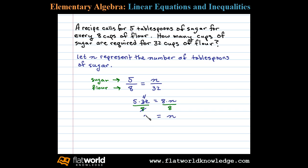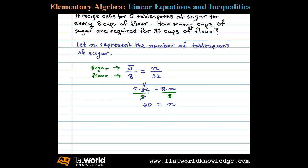So n equals 20, and n represents the number of tablespoons of sugar. All that's left is to answer the question in the form of a sentence. Therefore, 20 tablespoons of sugar are required.